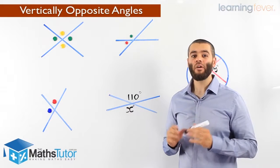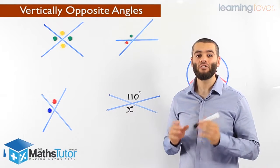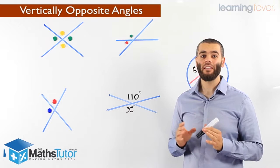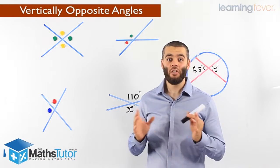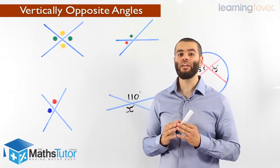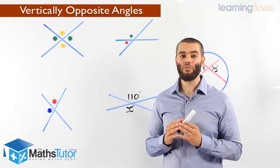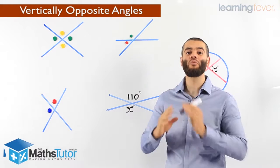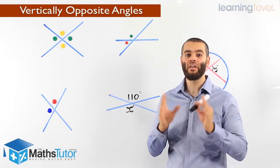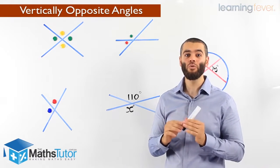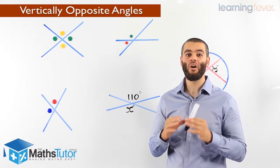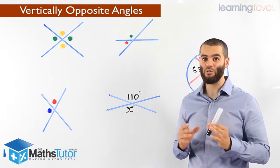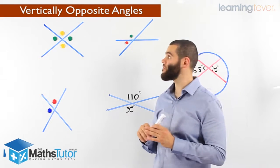Hey guys, I'm going to show you how to identify and locate vertically opposite angles. Vertically opposite angles are angles that are created when two straight lines cross one another. There are four angles that are created — two pairs of vertically opposite angles. Let's go through and see how they work.